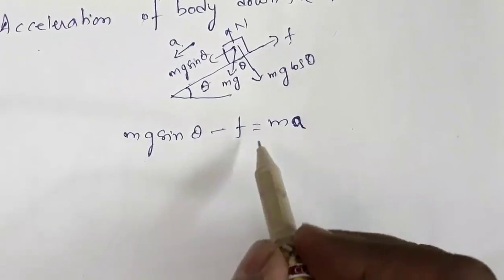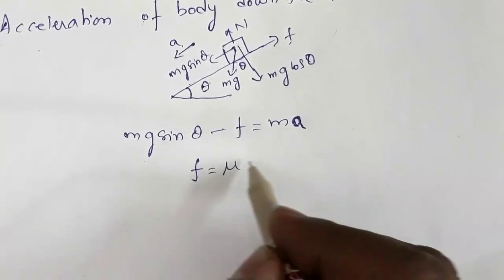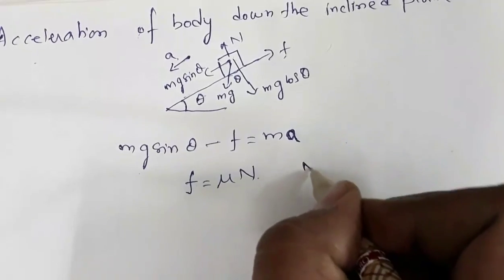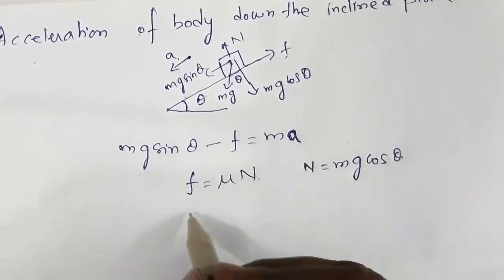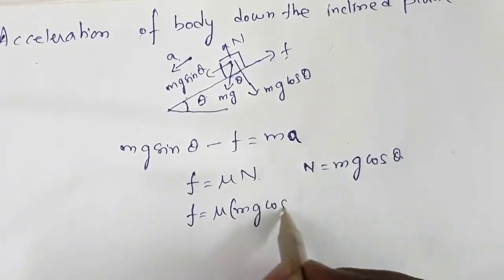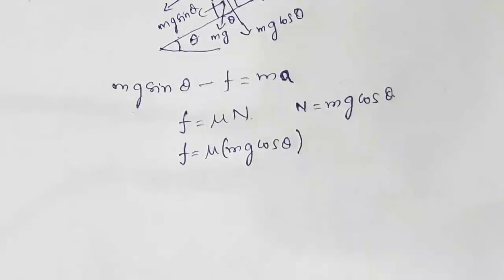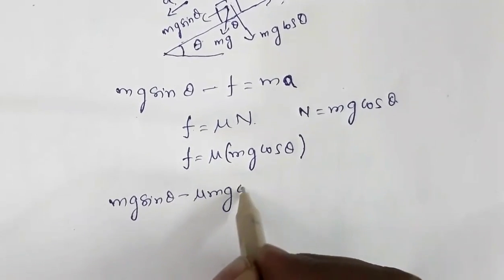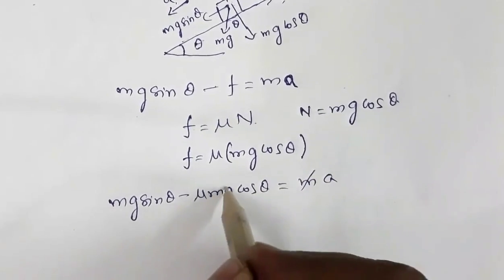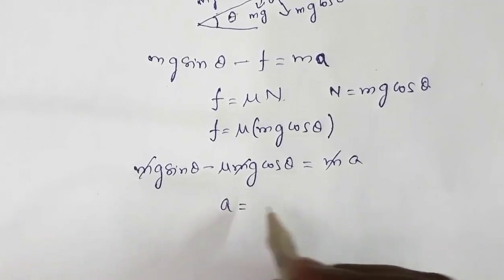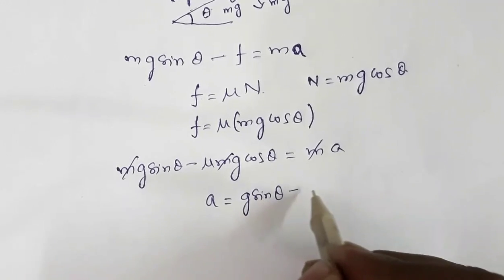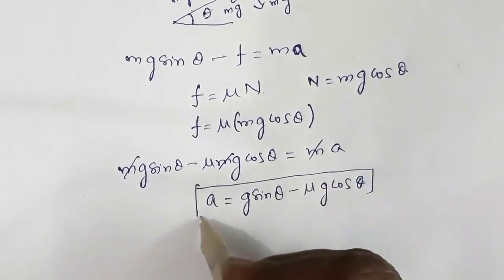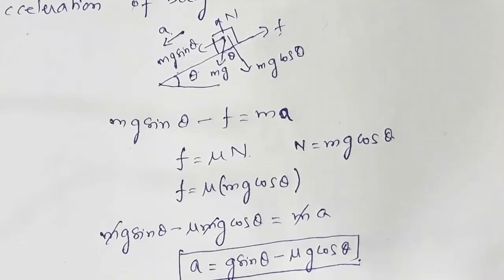The friction force F equals μ times the normal reaction. From the diagram the normal reaction equals mg cos θ, so F equals μ mg cos θ. Substituting: mg sin θ minus μ mg cos θ equals ma. The mass m cancels, giving acceleration a = g sin θ − μg cos θ. This is the acceleration of the block down the inclined plane.